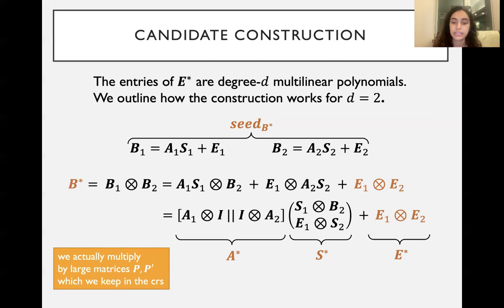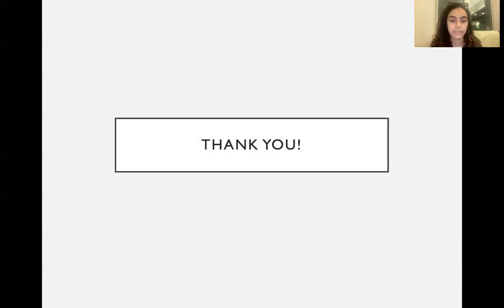In the paper, we also do some cryptanalysis showing that some attacks such as linearization, sum of squares, and covariance attacks won't work on E*. And there's also been some recent work showing that we cannot actually hope for E* to look pseudo-IID on its own. However, again, we don't need that. All we need is for E* to flood the error from one AND operation. So we still have confidence in our scheme. And I think that's my time. So thank you.